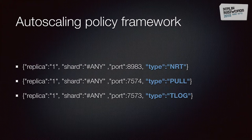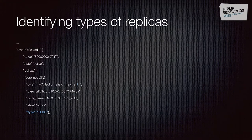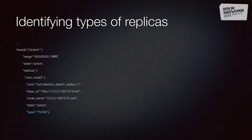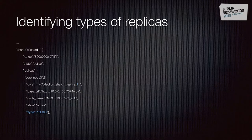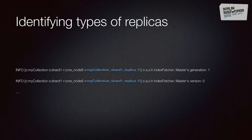You can use the autoscaling policy framework to choose which replica types go to different nodes. To identify replica types, look at the cluster state — each replica has a type key indicating its type. Also, when you create collections via the Collections API, the core name will include the replica type: 't' for TLOG, 'n' for NRT, or 'p' for pull. This is useful because Solr includes the core name in most log entries, so you can quickly identify which type of replica is logging.